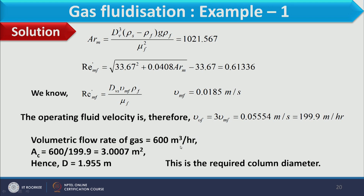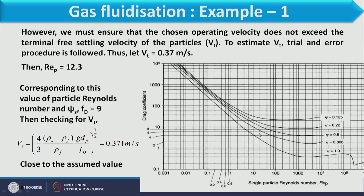The volumetric flow of gas is 600 m³/hour. The cross-sectional area of the column = volumetric flow / operating velocity = 3.0007 m². The required column diameter is therefore 1.955 m. The operating fluid velocity of 0.05554 m/s must never exceed the terminal settling velocity of the particle, otherwise entrainment would occur.